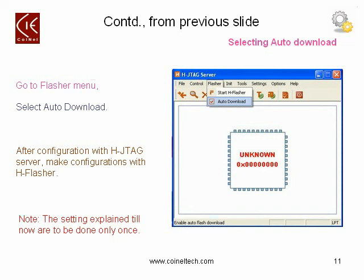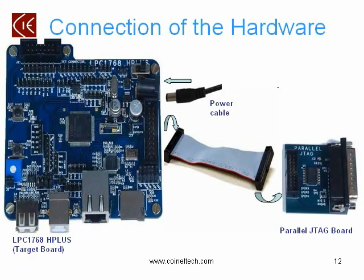Now let's see how to download your code. To download code, there is an option called Auto Download — go to the Flasher menu and select Auto Download. After configurations with the H JTAG server, you need to make configurations with H Flasher. After the basic configurations, here is how your hardware setup connection should be. On the left side is the LPC1768 H-Plus board, on the right side is the Parallel JTAG board, and there is also a flat cable. Before starting H JTAG configurations, power up your board and make the connections as shown in the slide.